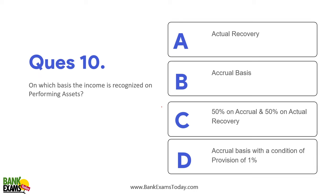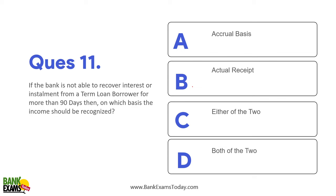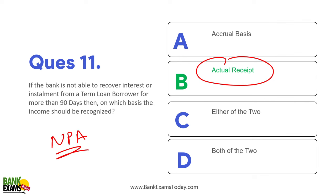On a performing asset, income is recognized on an accrual basis. On NPAs, income is recognized on an actual (cash) basis. If a bank cannot recover interest or installment from a term loan for more than 90 days, income should be recognized on actual receipt basis, as it has become an NPA.